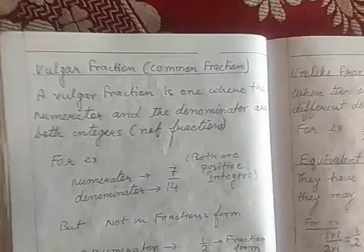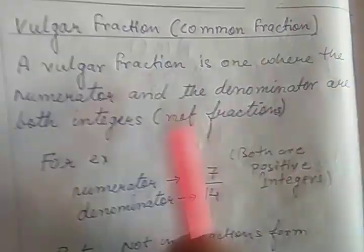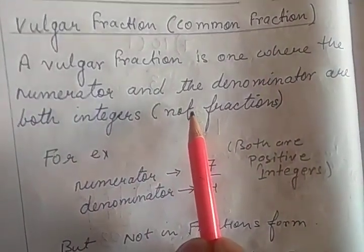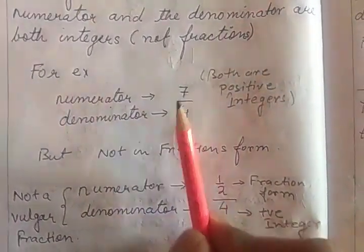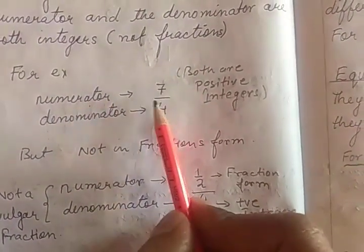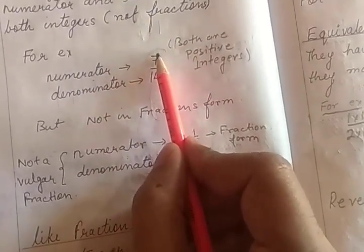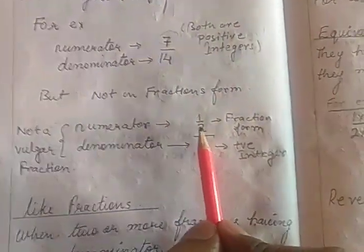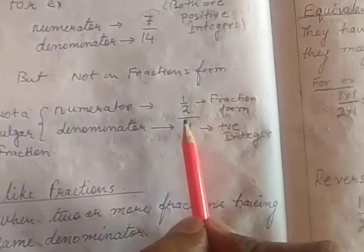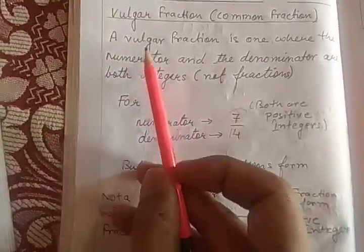Vulgar fraction, also known as common fraction: a vulgar fraction is one where the numerator and denominator are both integers and not fractions. Integers can be positive or negative. Here, 7 as numerator and 14 as denominator — both are positive integers — so it is a vulgar fraction. But if we put a fraction form in the numerator, such as 7/2 upon 14, then the whole part is not a vulgar fraction, because the numerator part is in fraction form.